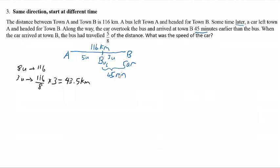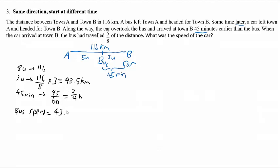Speed is usually represented in km per hour, so we need to convert 45 minutes to hours. We cannot just take the distance divided by 45 minutes directly, because that would give us km per minute. So we convert 45 minutes to hours by taking 45 divided by 60, since 1 hour equals 60 minutes, and we get three-quarter hour. To get the bus speed, we take the distance 43.5 divided by the time, which is 3 over 4.